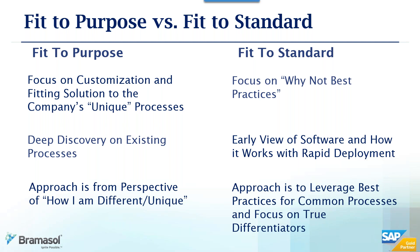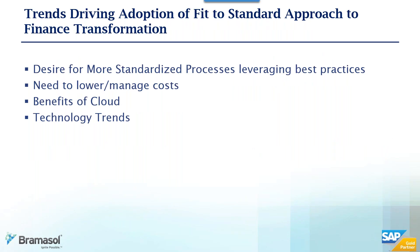Every business does certain things uniquely — that's what makes you special. But fit to standard says that 15-25% of your business that is unique should get focus, while common processes like paying bills or checking bank accounts follow standard practices. The unique aspects might be available-to-promise, cash management, or global liquidity in a working capital management scenario. Companies are realizing they have competitive advantages in certain processes and should focus there rather than customizing generic finance functions like clearing open items.